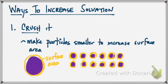So there are several ways to increase solvation. The first one is to crush it. Basically you're trying to make the particles smaller to increase surface area. The whole point of solvation is trying to get the particles of solvent to run into the particles of solute.